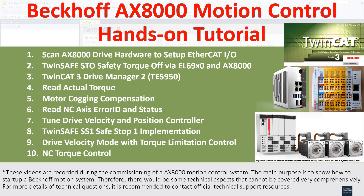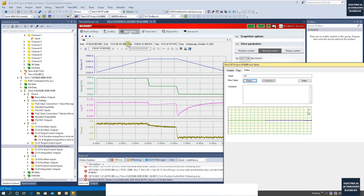Hello everyone, welcome back to this Beckhoff AX8000 motion control series video. In this video we will discuss topic number 4: how can we read the actual torque value from the AX8000 drive. This is also a similar idea to reading the actual torque from the AX5000. As shown on screen, when we use Run Motor to online monitor the position, velocity, and lag using the curve, from the scope view options we can turn on the actual torque.